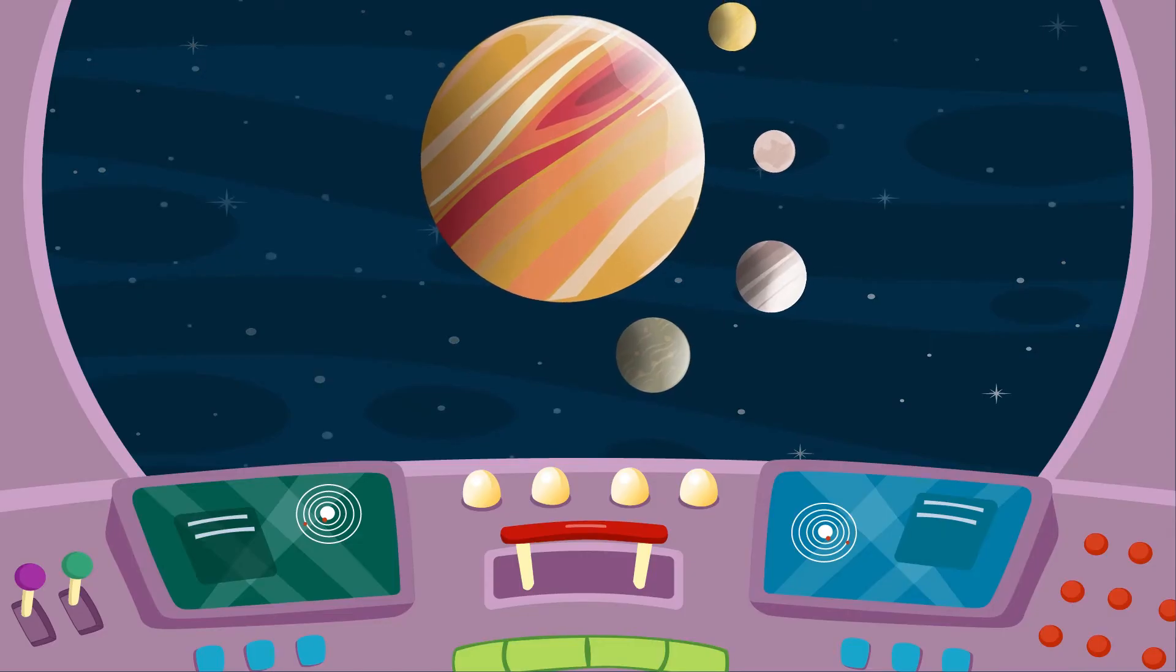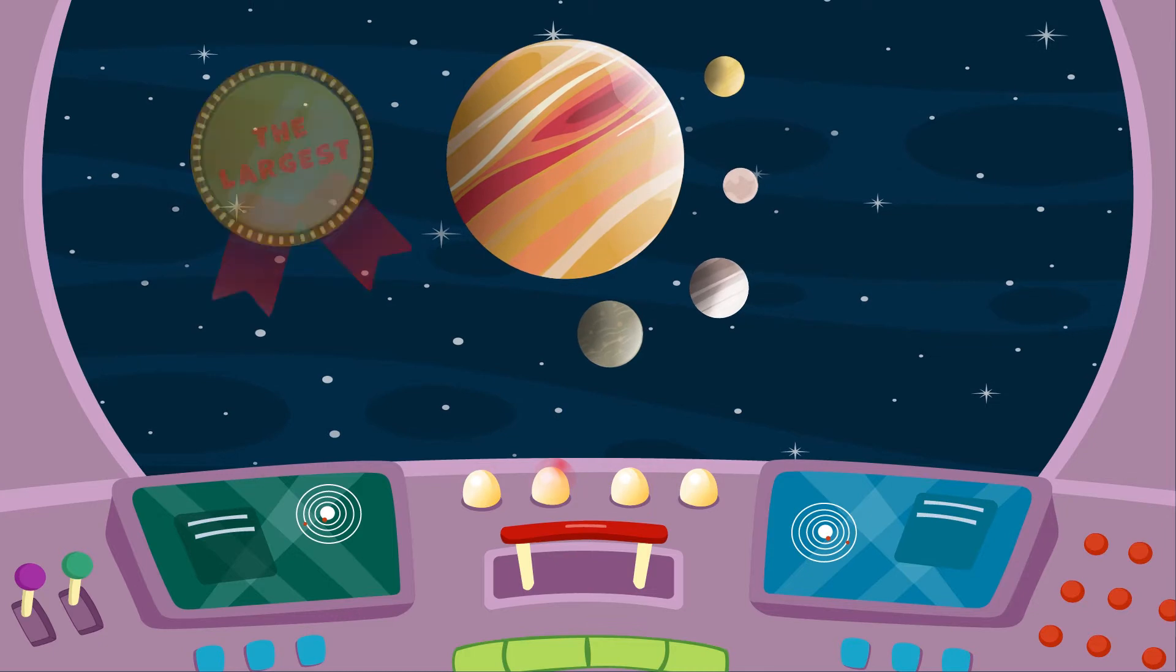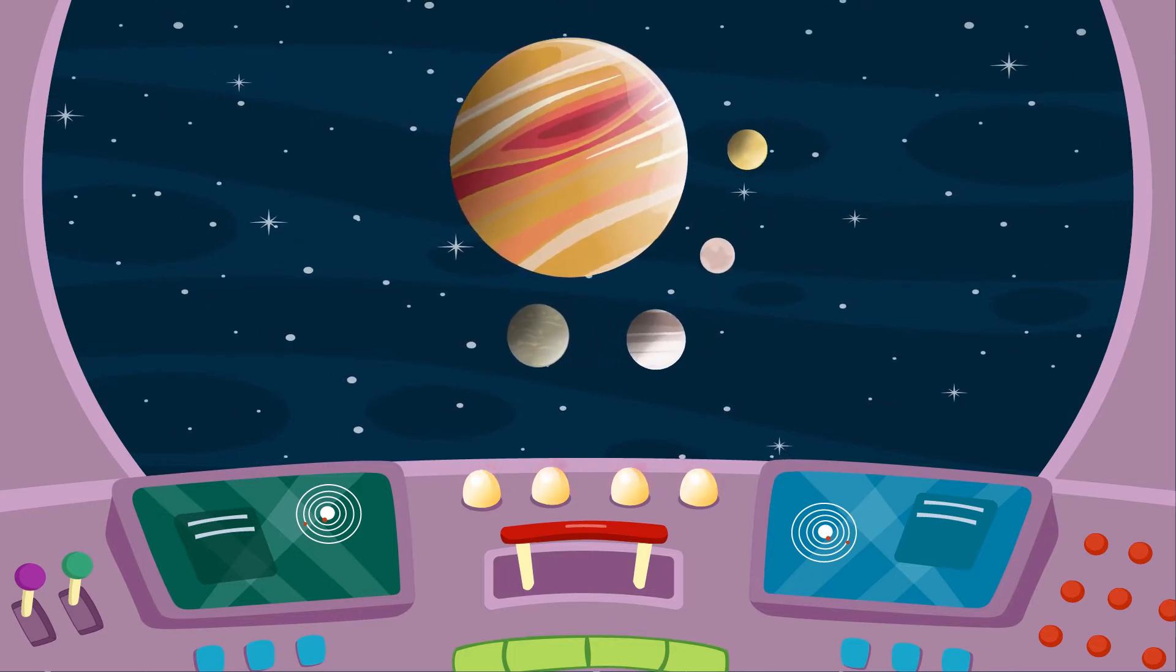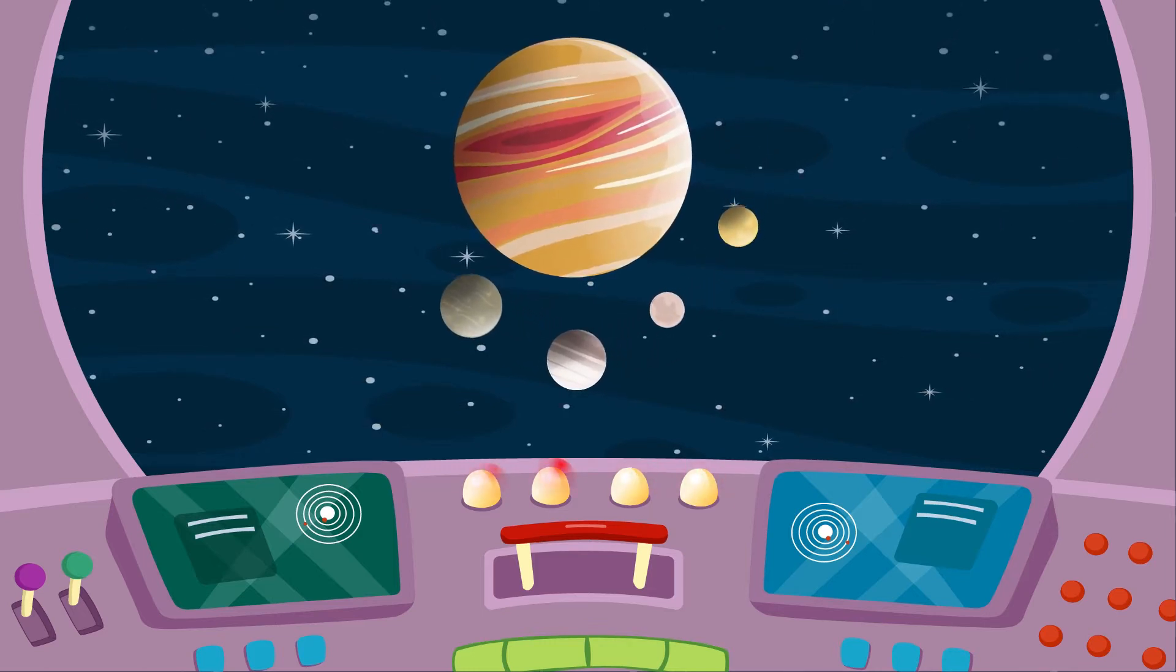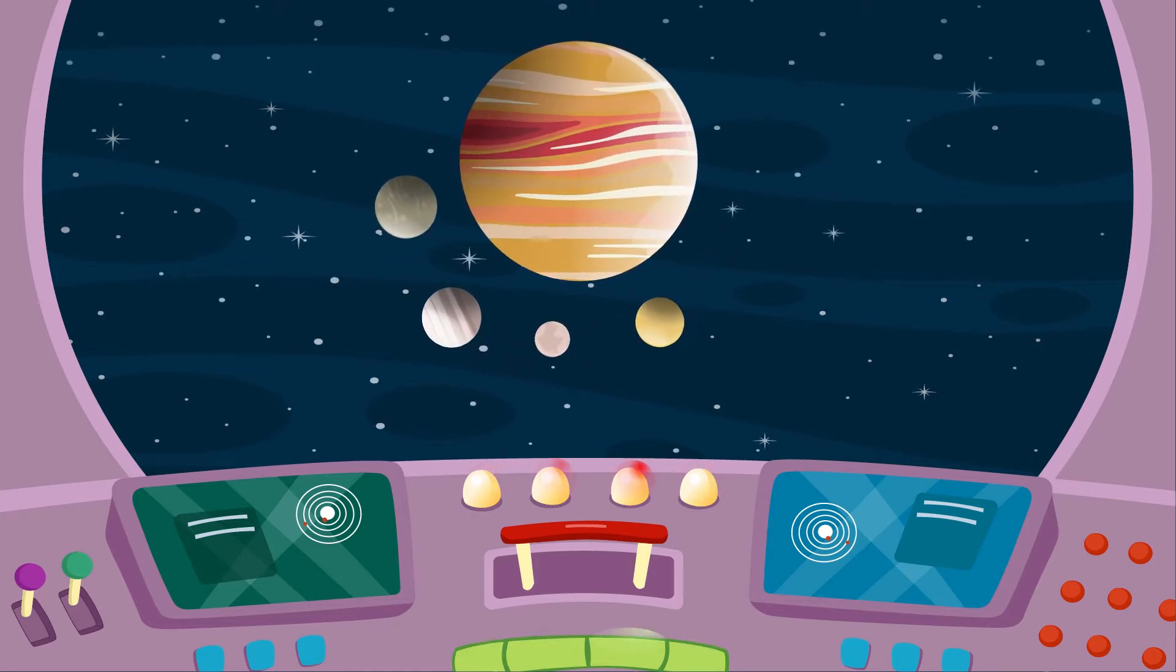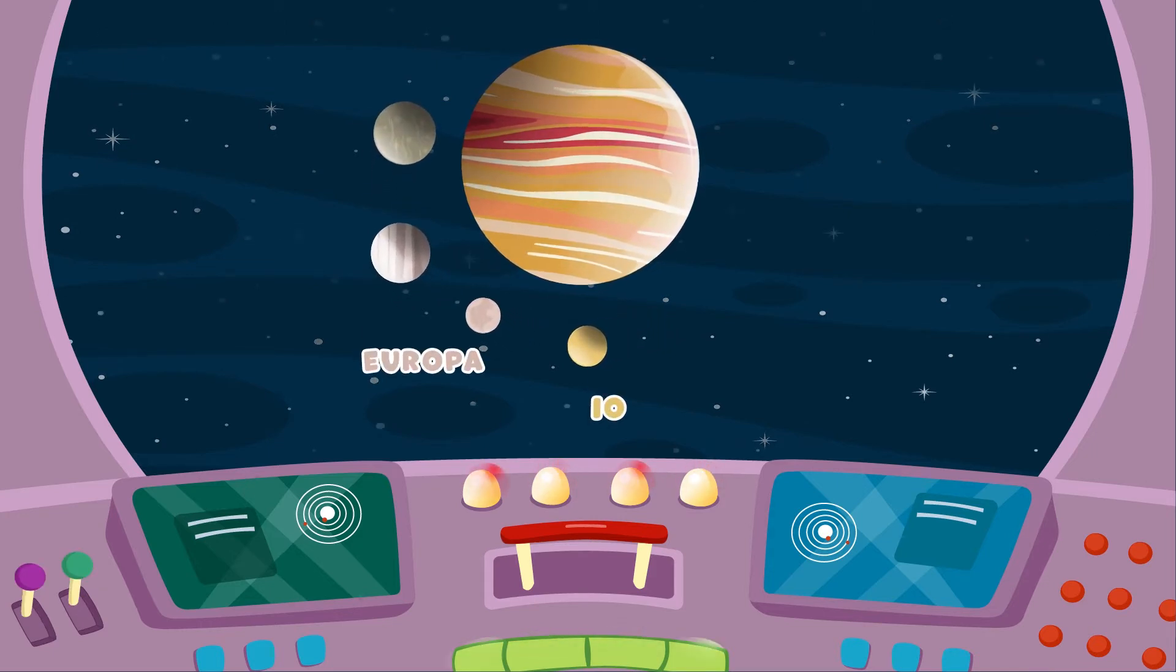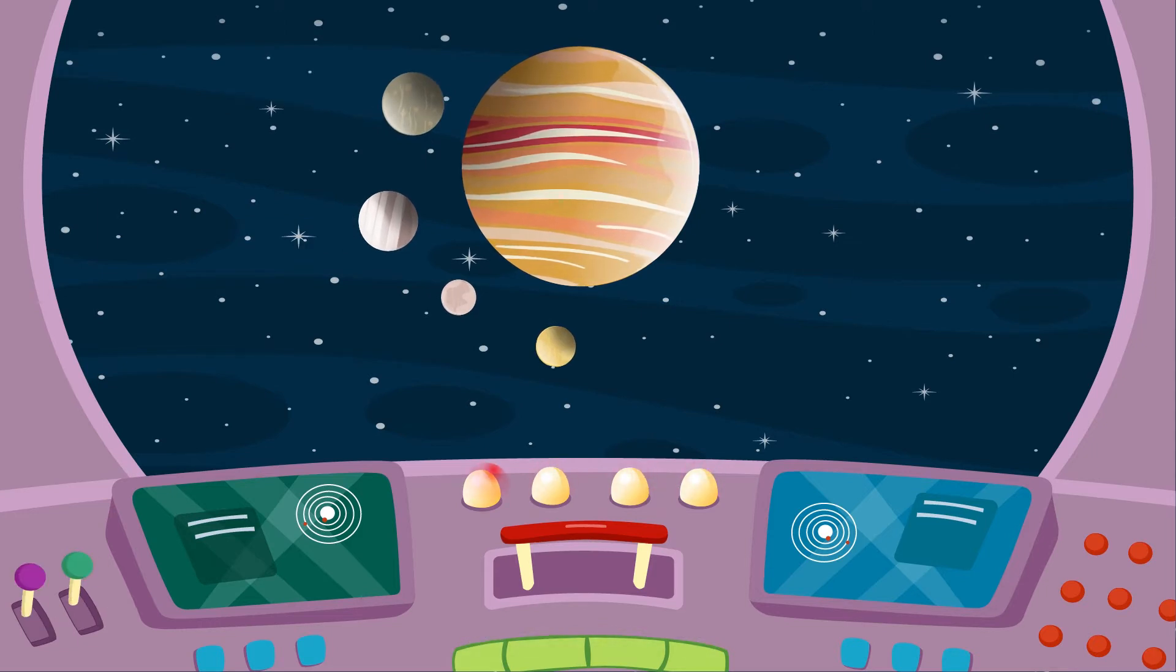Having passed the asteroids, Binky and friends see Jupiter, the largest planet in our solar system. It has a big red spot on its surface, which is actually a giant hurricane-like storm that has lasted over 300 years. Jupiter has four moons: Io, Europa, Ganymede, and Callisto. A day on Jupiter lasts around 10 hours.